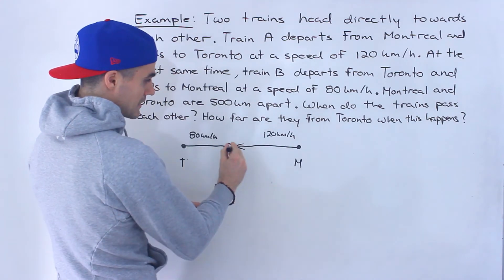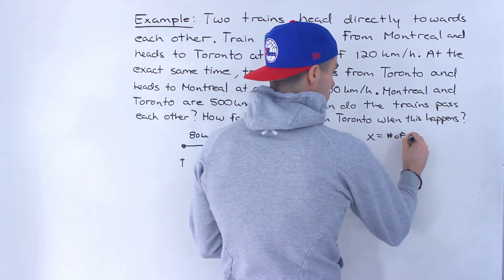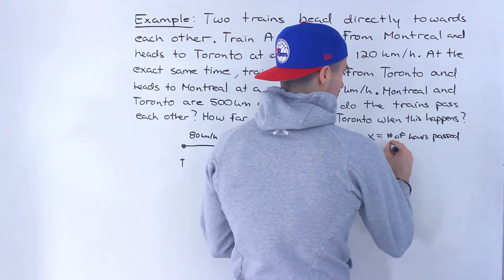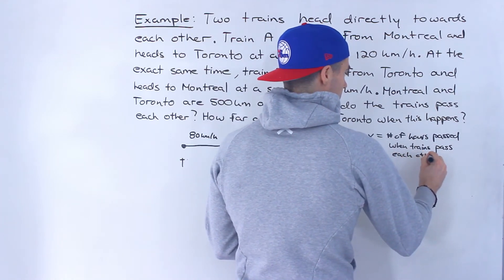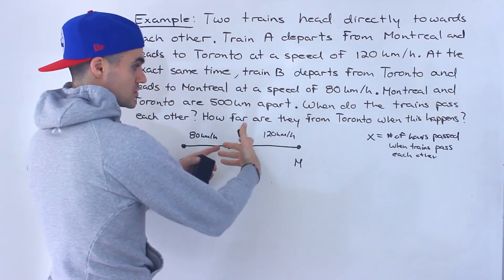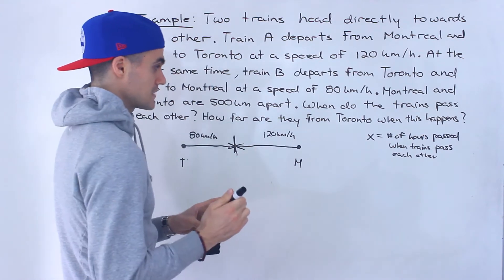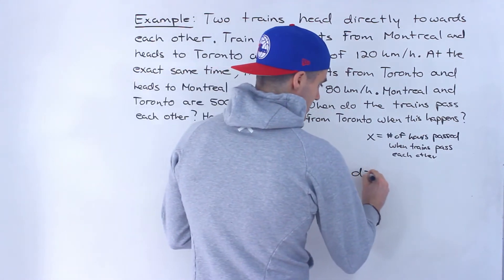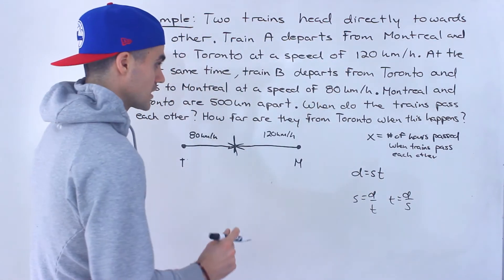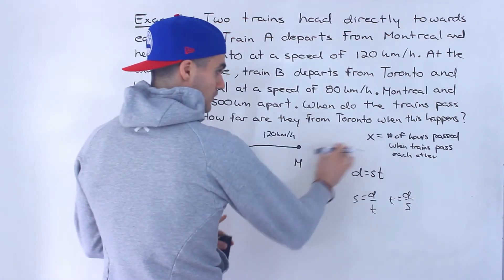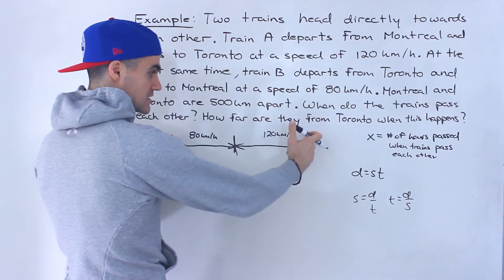Because they're going to be traveling for the exact same amount of time when they pass, we can introduce a new variable. We let x equal the number of hours that have passed when the trains pass each other — how long they've both been traveling until that point. We know distance equals speed times time, speed equals distance over time, and time equals distance over speed. We'll be using these relations.